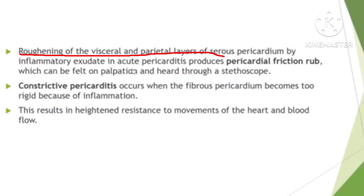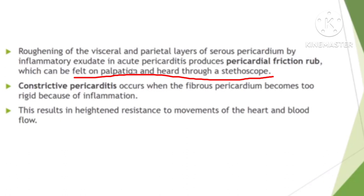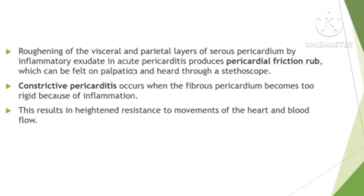Another condition involves roughening of the visceral and parietal layers of the pericardium. Normally, the serous fluid provides lubrication. When the two layers become rough, friction occurs, and a rubbing sound — called a pericardial friction rub — can be heard and felt on palpation. In constrictive pericarditis, the outer fibrous pericardium becomes very rigid, losing its elasticity, which restricts the filling and emptying of the heart.